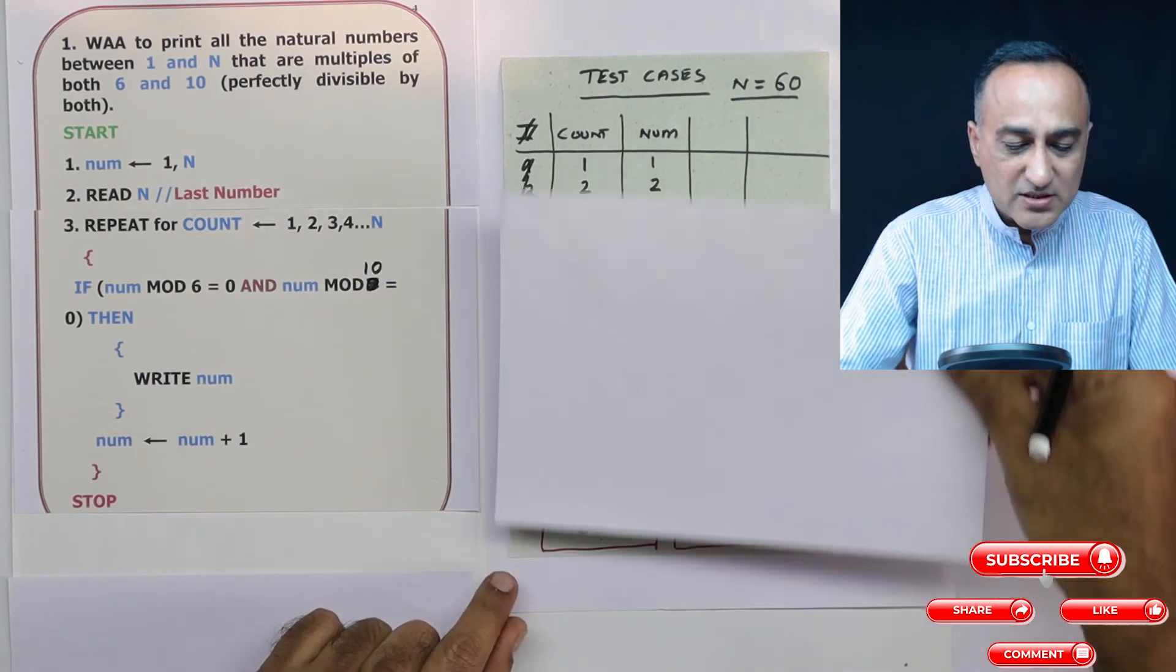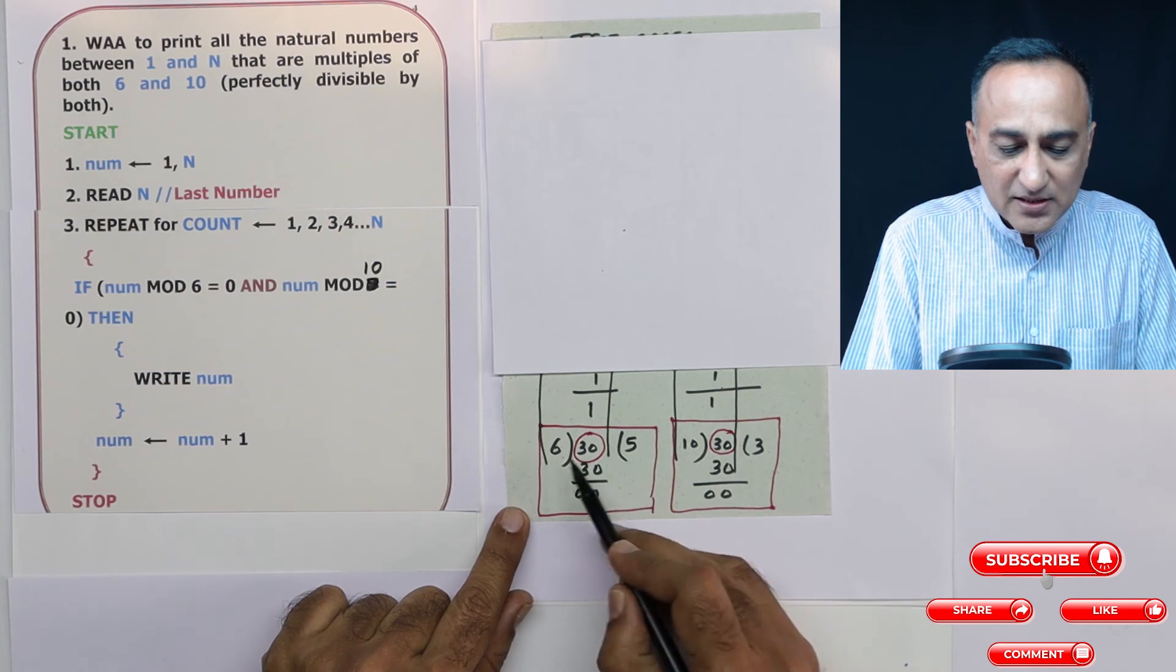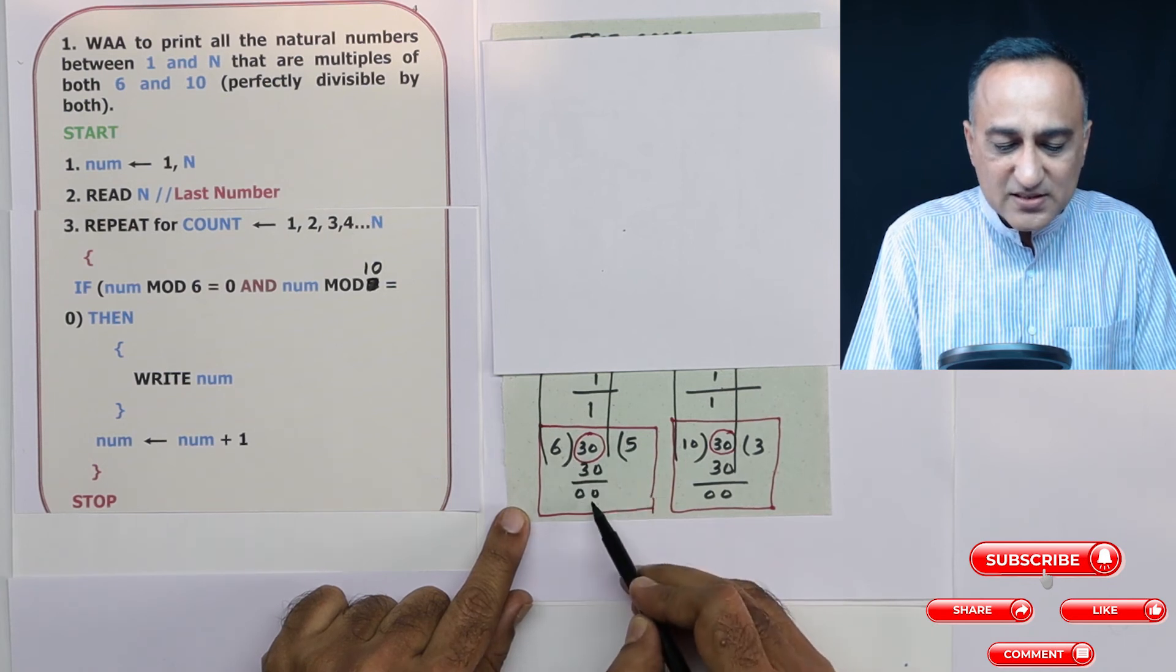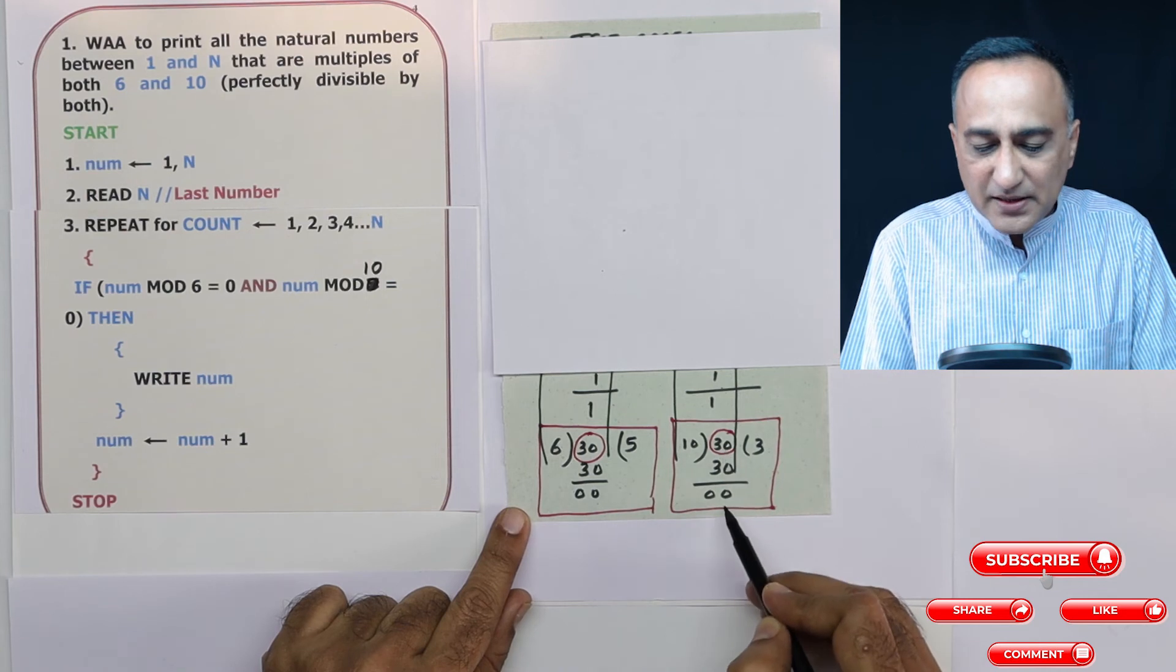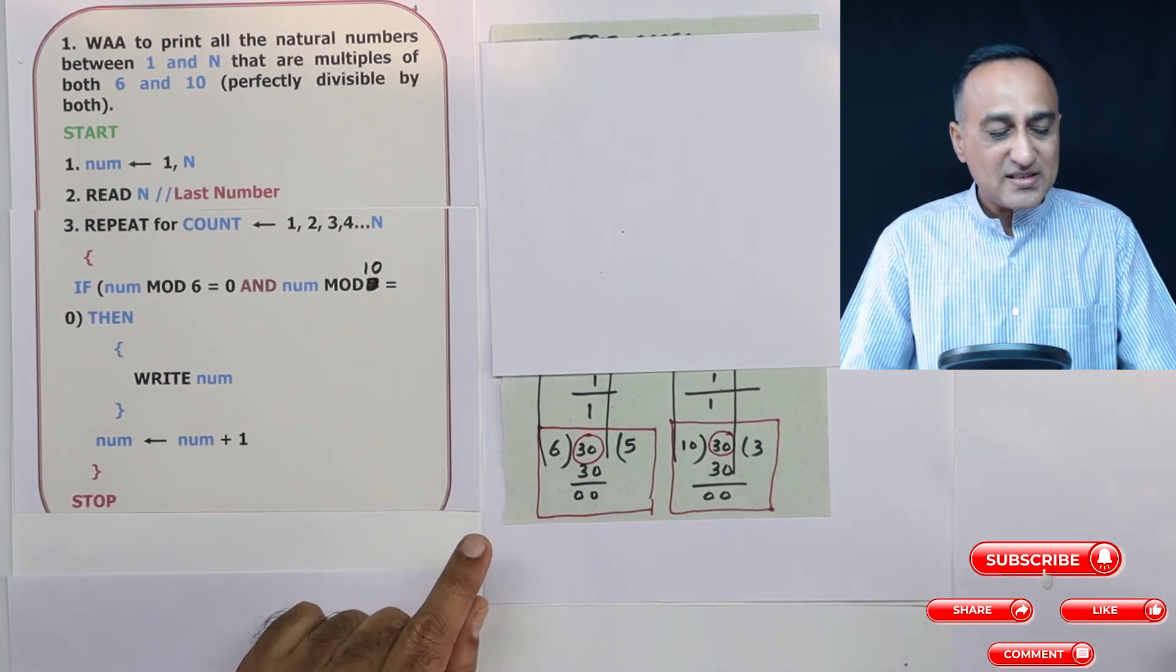So how does 30 and 60 work? Take a look at it. If I have 6 times 5, that's 30, remainder is zero. And 3 times 10, that's 30, remainder is zero. That's why it is printing 30 as the first number and 60 as the second number.